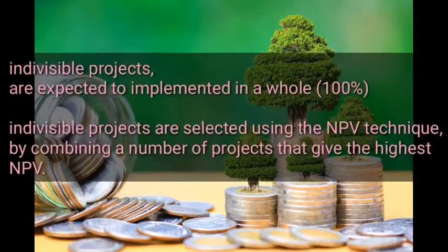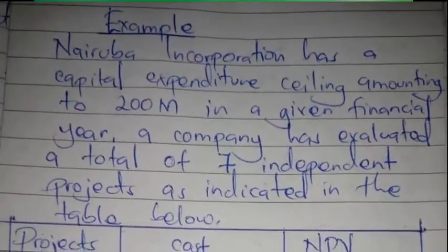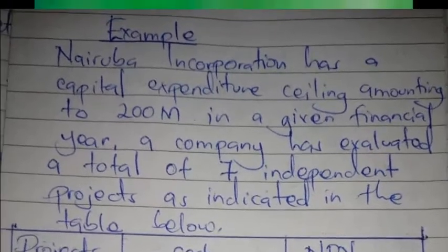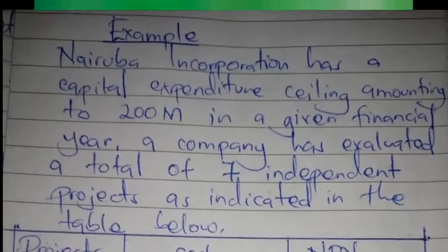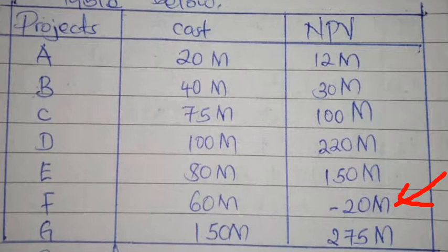By combining a number of projects that give the highest NPV. In the example, a company has a capital expenditure ceiling of 200 million in a given financial year and has evaluated seven independent projects — A, B, C, D, E, F, and G — each with their costs and net present values. Project F has a negative NPV, so we eliminate and reject it immediately.